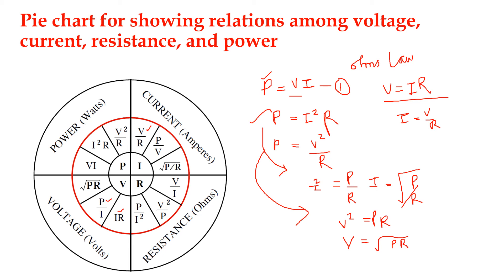Next, consider resistance. R is equal to V by I. From the power equations, R is equal to P by I squared, and R is equal to V squared by P. In this way we can find the relation between power, current, voltage and resistance. Thank you.